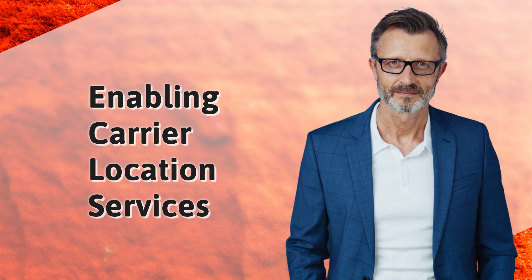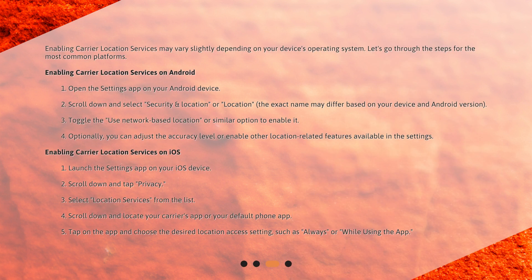Enabling Carrier Location Services may vary slightly depending on your device's operating system. Let's go through the steps for the most common platforms. To enable it on Android: 1. Open the Settings app on your Android device. 2. Scroll down and select Security and Location, or Location — the exact name may differ based on your device and Android version. 3. Toggle the Use Network-Based Location, or similar option, to enable it. 4. Optionally, you can adjust the accuracy level or enable other location-related features available in the settings.